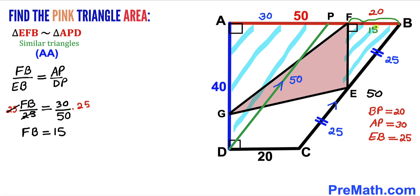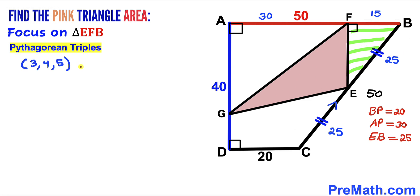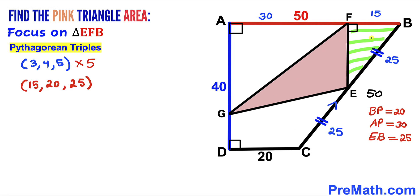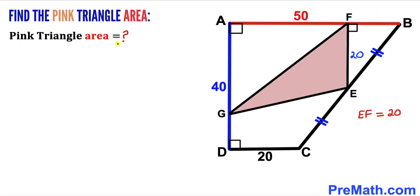Now let's focus on right triangle EFB with side lengths 15 and 25. Recalling the Pythagorean triplet 3-4-5 and multiplying by 5 gives 15-20-25. Since our known sides are 15 and 25, the missing side EF is 20 units.